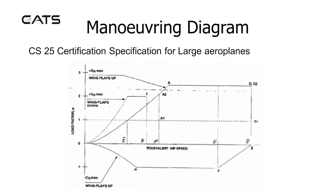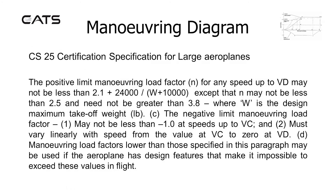These are all positive limiting load factors. Beneath the zero load factor is effectively negative G, and the negative G limit for safe manoeuvring is less. The positive limit manoeuvring load factor N for any speed up to VD (design dive speed) may not be less than 2.1 plus 24,000 divided by (weight + 10,000), except that N may not be less than 2.5 and need not be greater than 3.8.